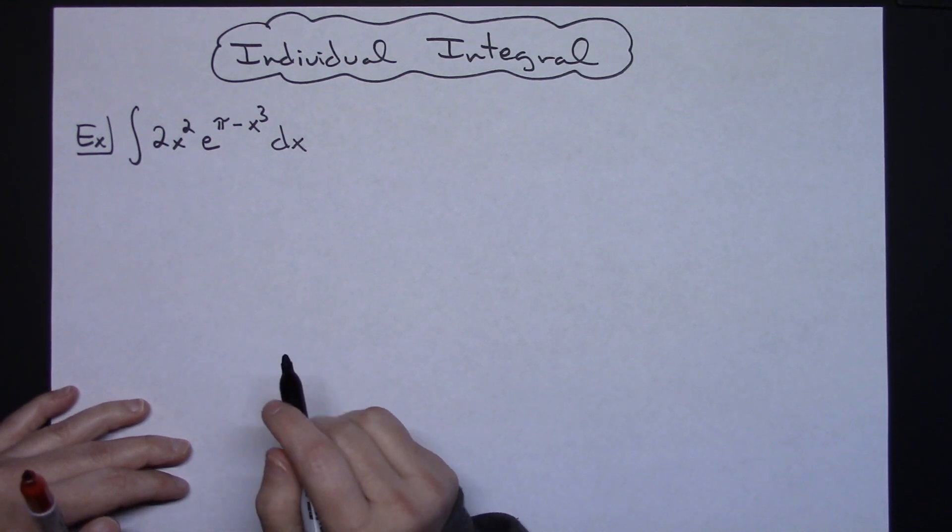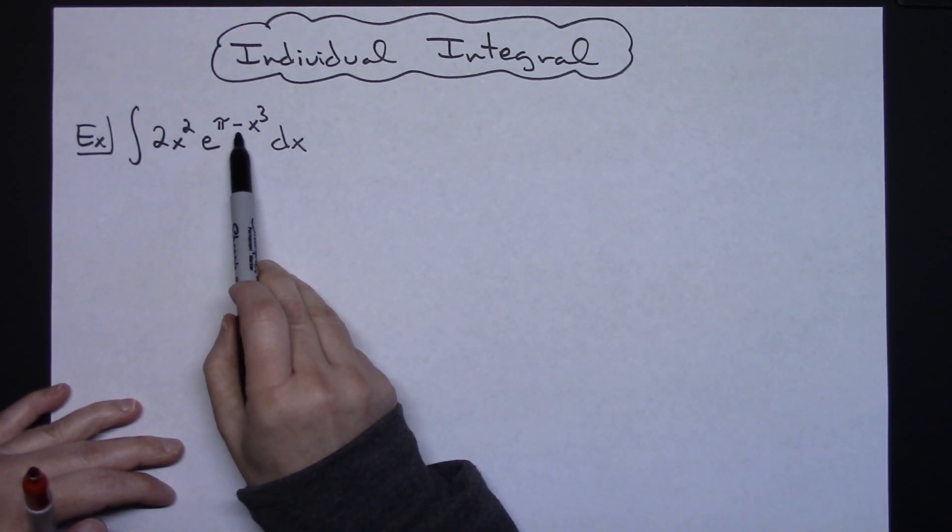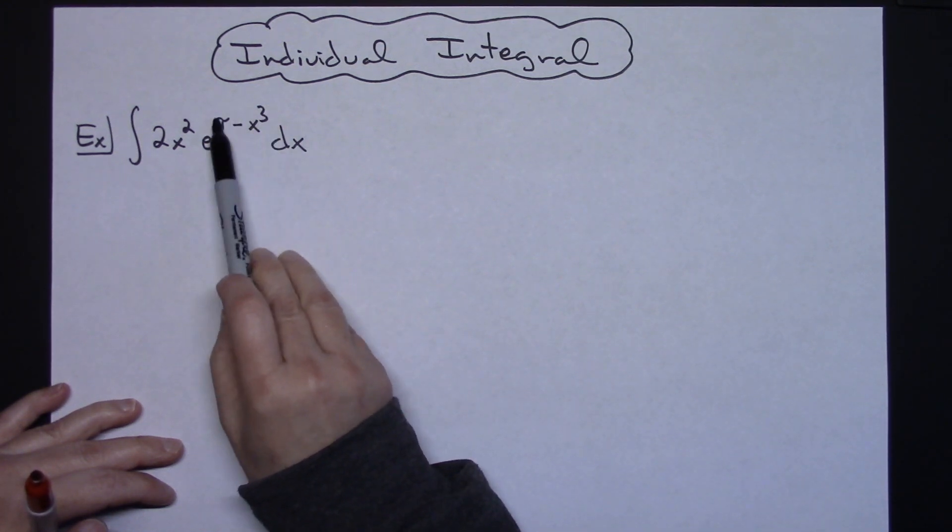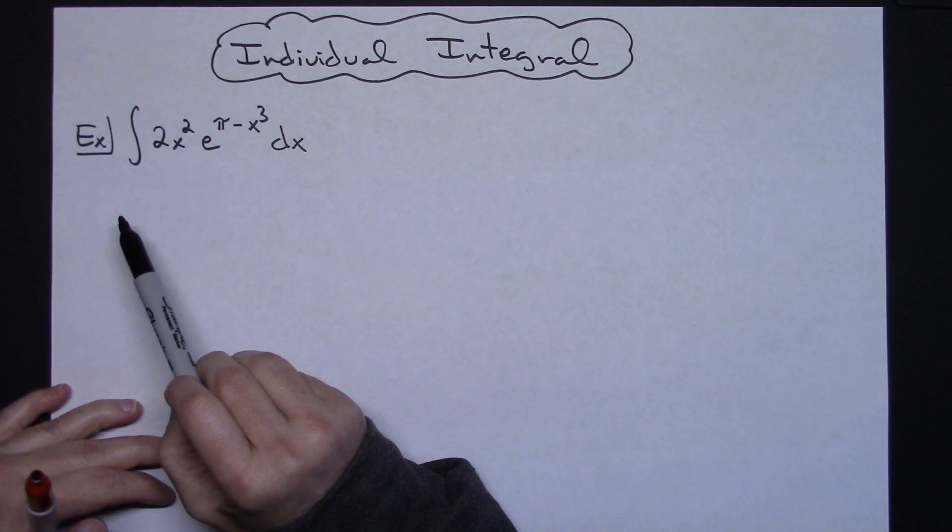Alright now it is going to end up being just a straight u substitution here. I am going to take a look at that exponent on the base e which is pi minus x to the third. I kind of realize that that right there is going to make a nice little derivative for things to cross out.